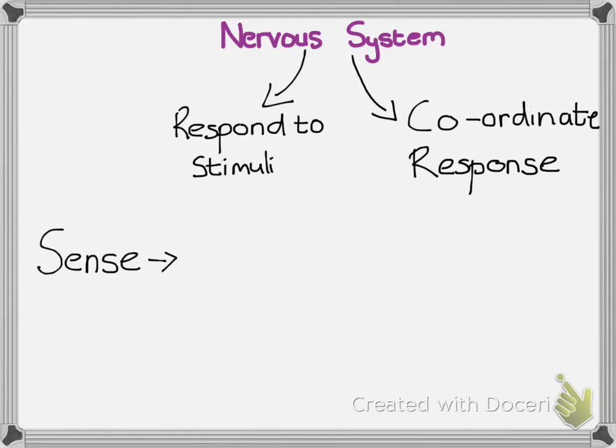The brain then needs to interpret this information, and we call this an integrative function. All the information the brain is receiving needs to be integrated — put together like a puzzle — so the brain has a large overall picture of what is happening outside the body. Once it has collected all that information, it needs to create a response, which brings us back to responding to stimuli and coordinating a response.